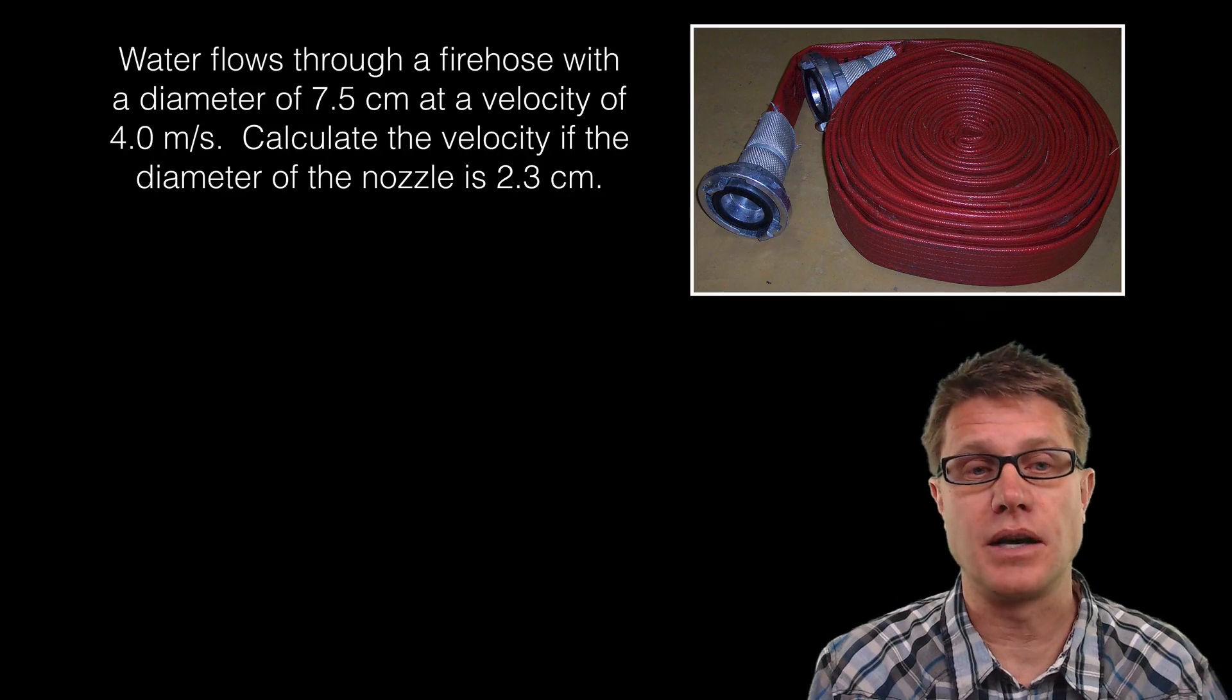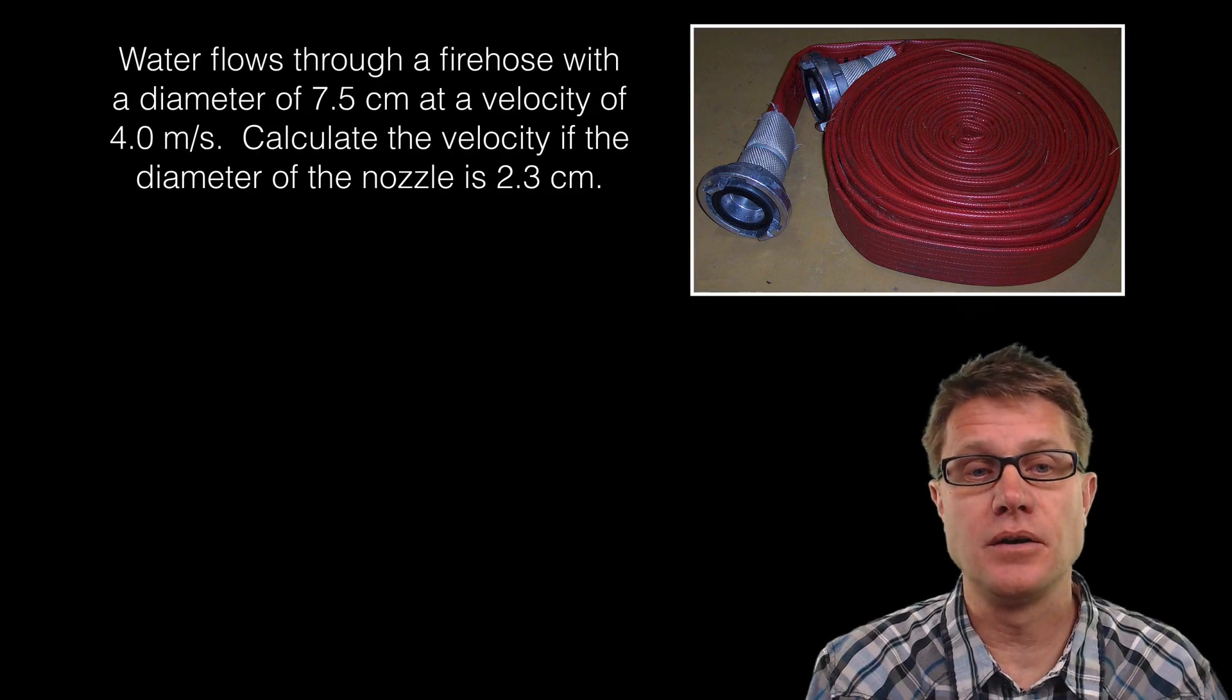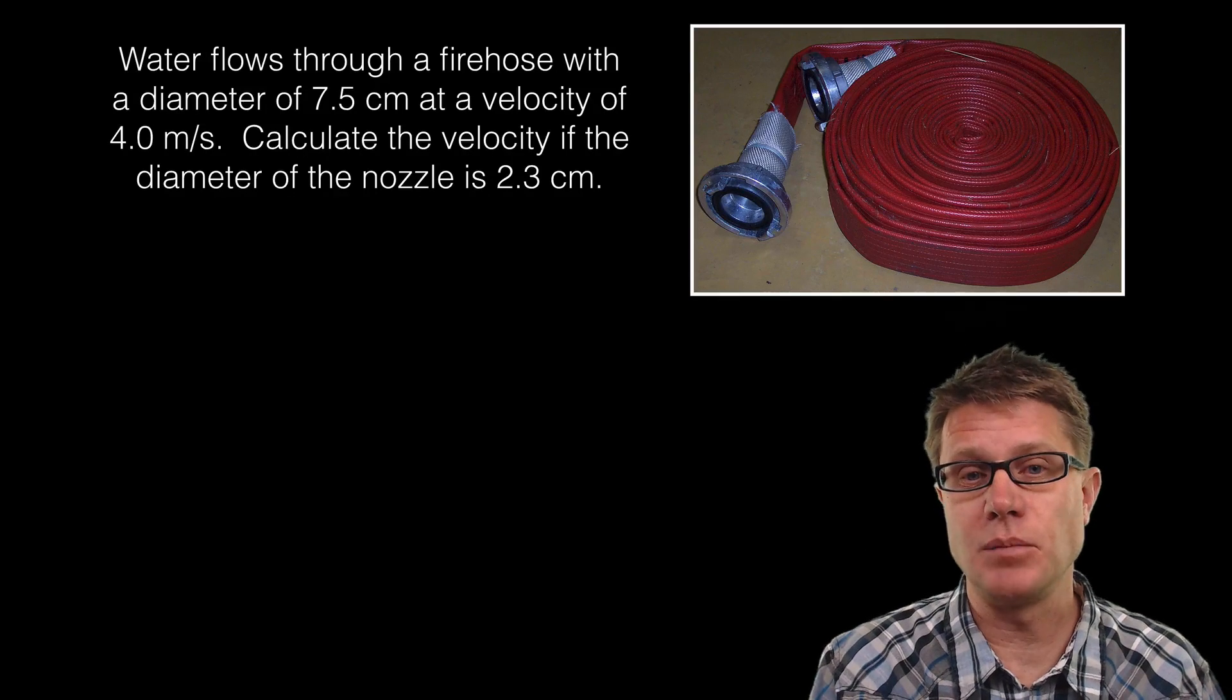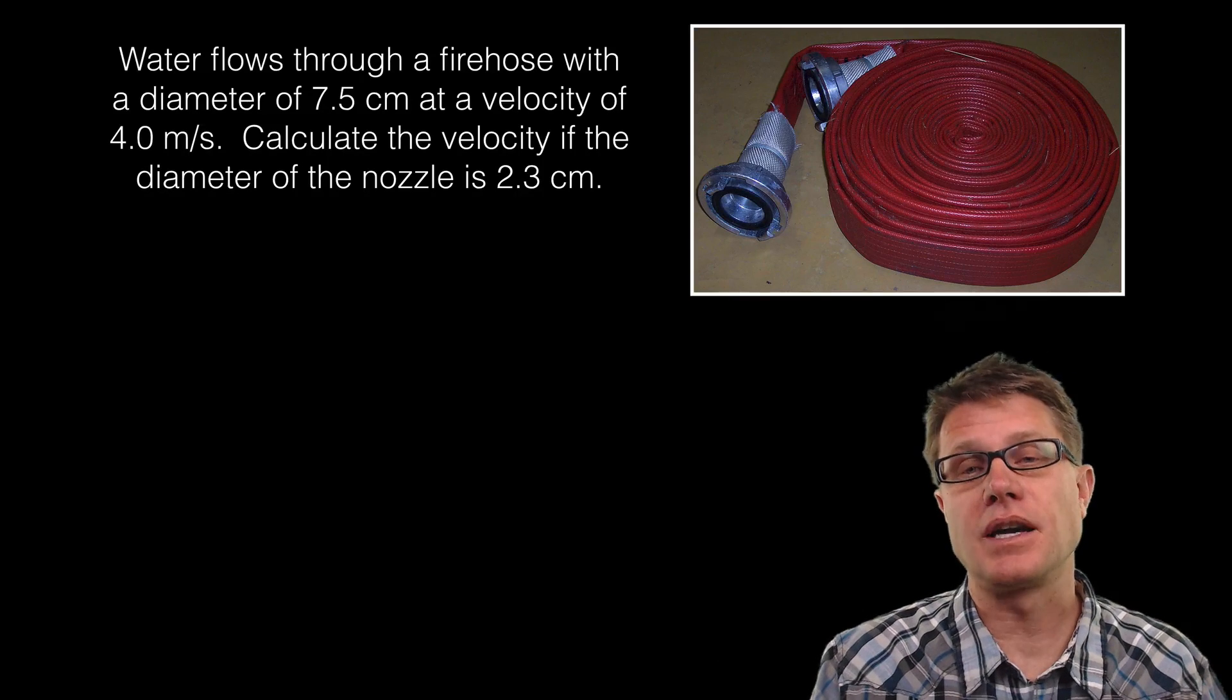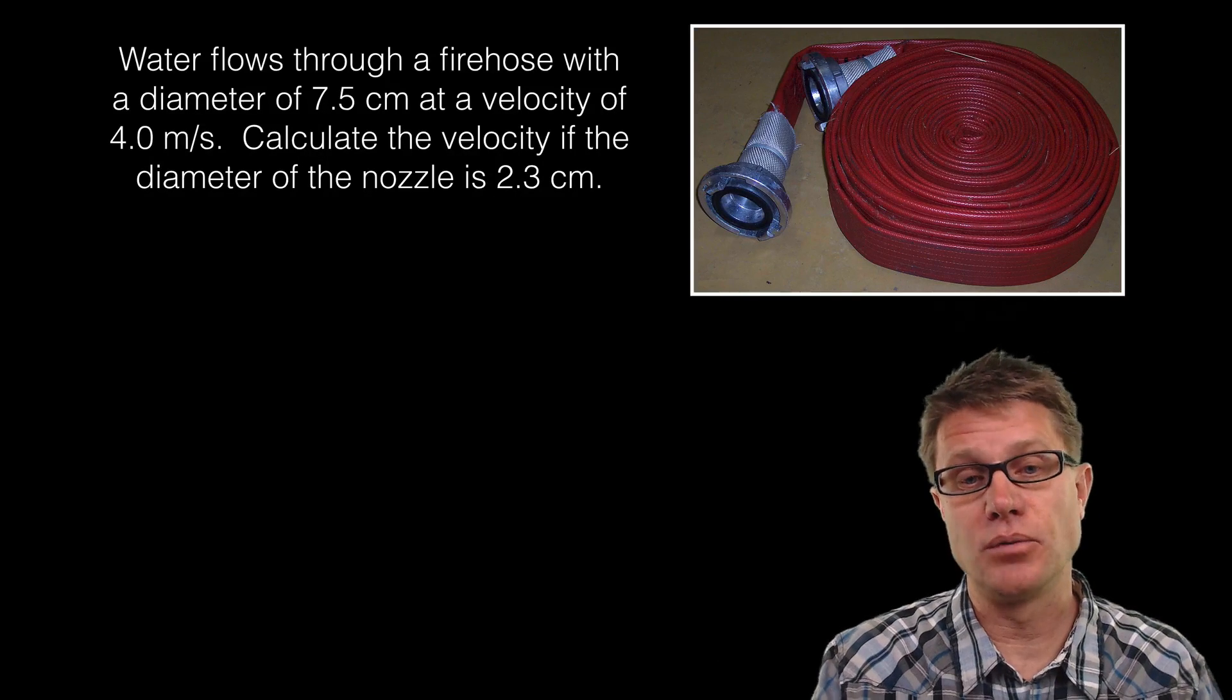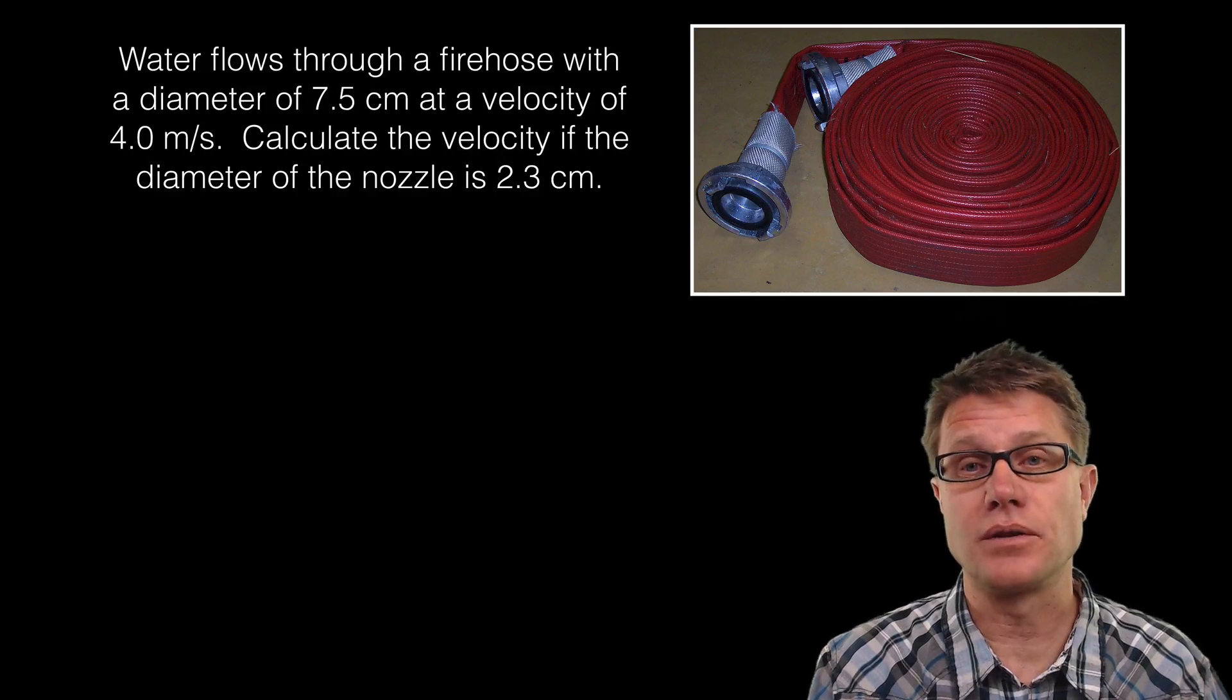And so you might see a continuity equation like this. Water flows through a fire hose with a diameter of 7.5 centimeters. They are giving you the velocity at 4.0 meters per second. And you need to calculate the velocity coming out if we restrict the size of the nozzle to 2.3 centimeters.